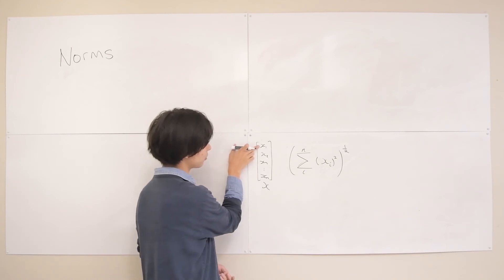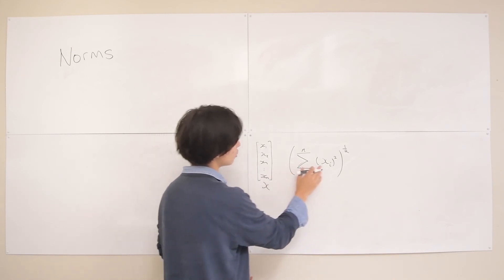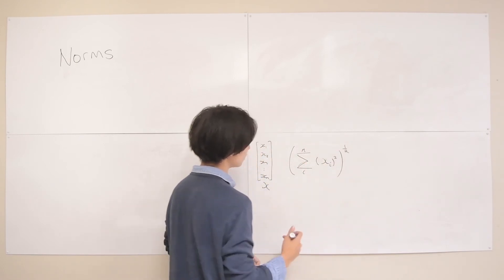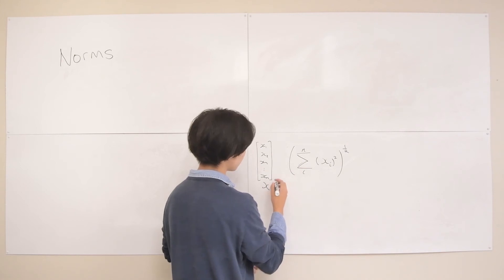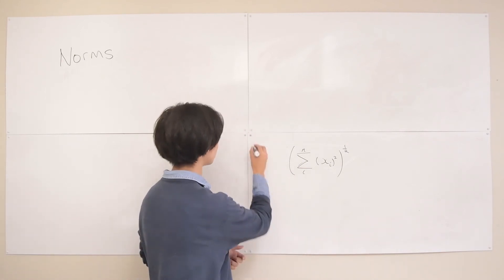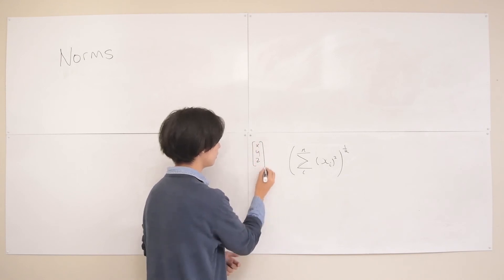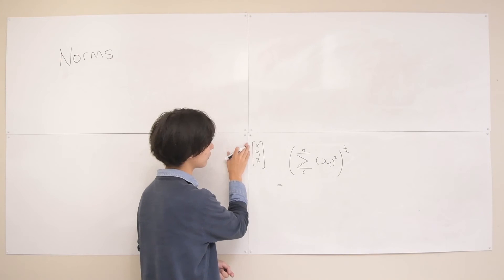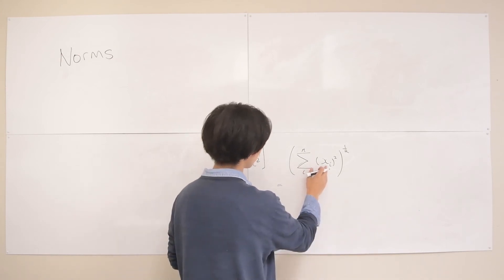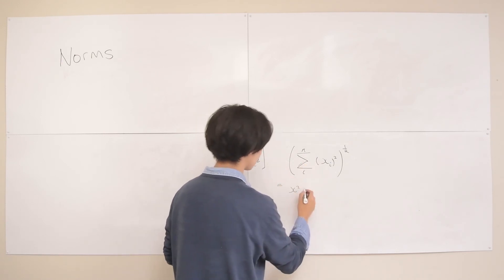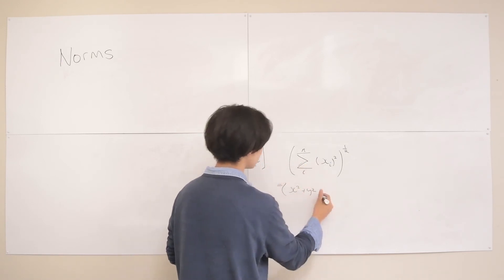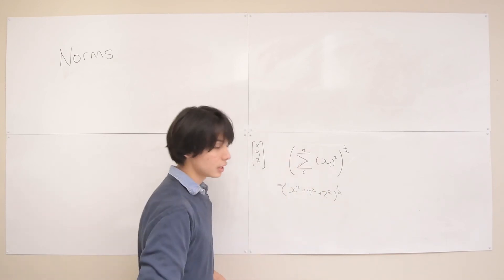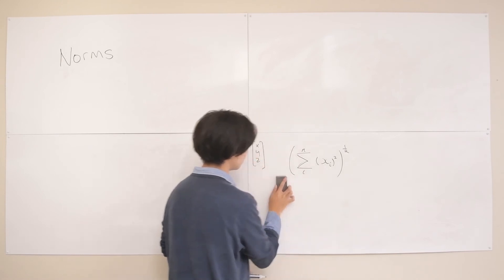To compute the Euclidean norm, you cycle through each element, square it, add it to the next element squared, and once you have the final sum, take the square root. For a three-dimensional vector (x, y, z), this equals the square root of x squared plus y squared plus z squared — exactly the same as the Pythagorean theorem result. This just extends it to any n-dimensional vector.